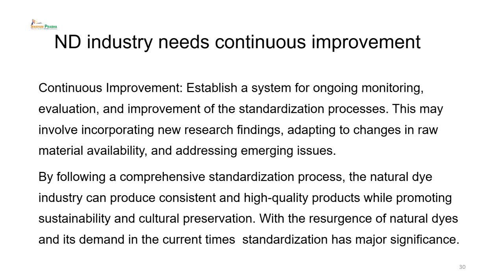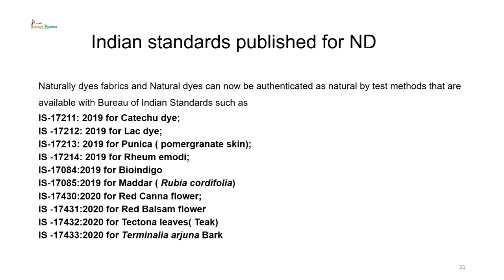With the resurgence of natural dyes and their demand in current times, standardization has major significance. Some Indian standards that we were able to publish — and I am very happy and proud to say — have been published very recently in 2019 and 2020. Now we have Indian standards for Acacia catechu (catechu dye), Lac dye, Punica (pomegranate skin), Rheum emodi, Bioindigo, madder (Rubia tinctorum), red canna flower, red balsam flower, tectona leaves, and Terminalia arjuna. This was achieved after huge experimentation and published through the Bureau of Indian Standards.